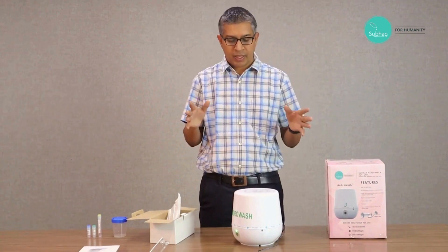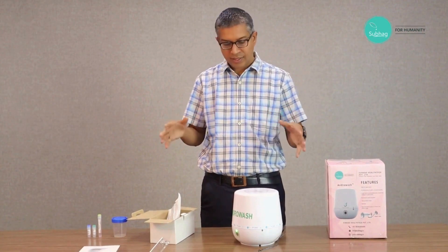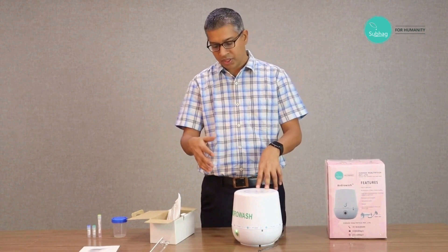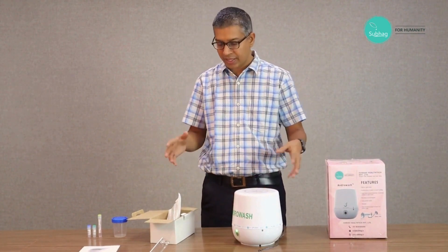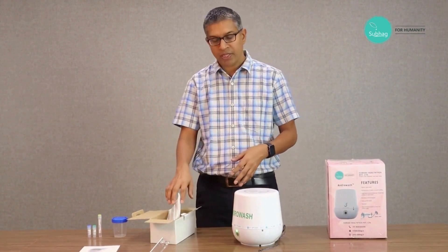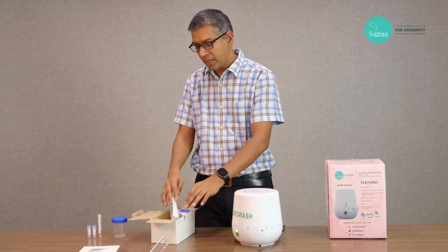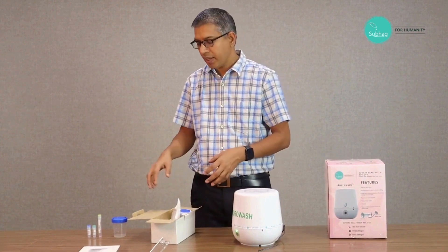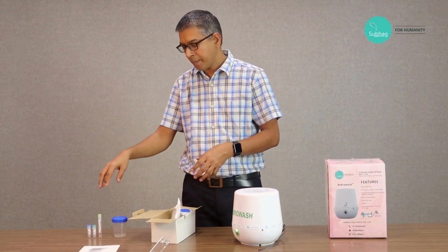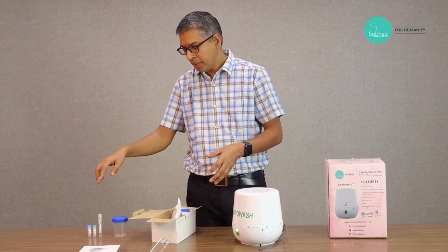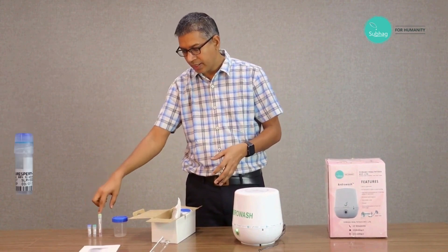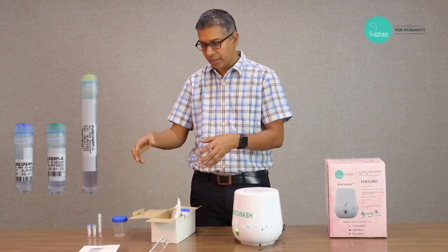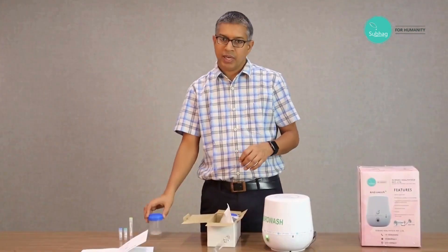For doing this method, what we need is first the centrifuge which is Androwash automatic centrifuge, and then the consumables like the semen collection container, the centrifuge tube, pasture pipette, syringe, etc. Then we need the density gradient medium, the low density medium, high density medium, and culture medium. And then we need the semen sample.